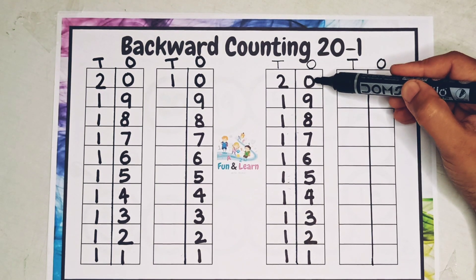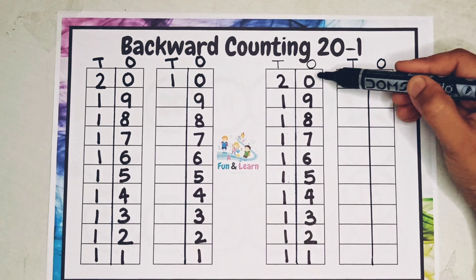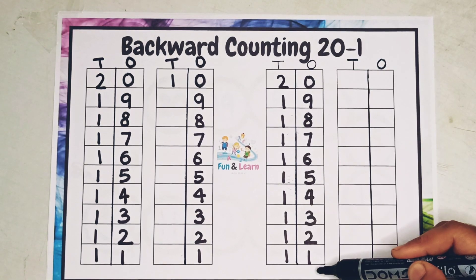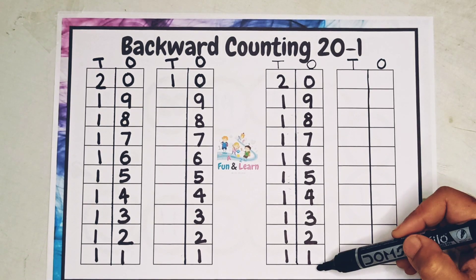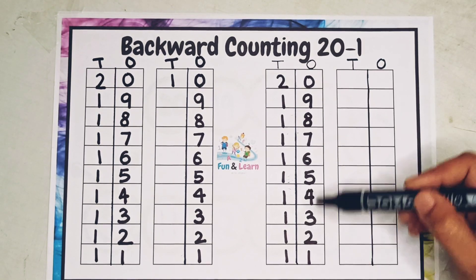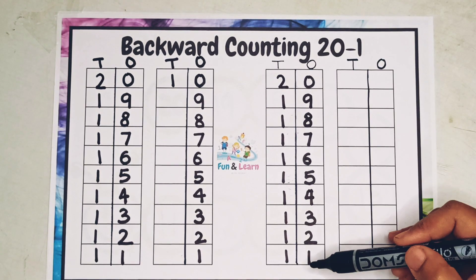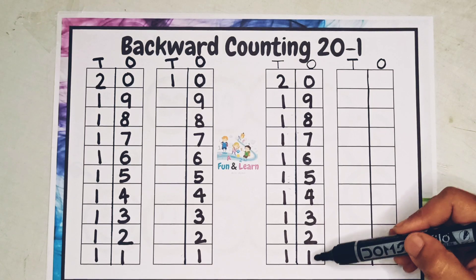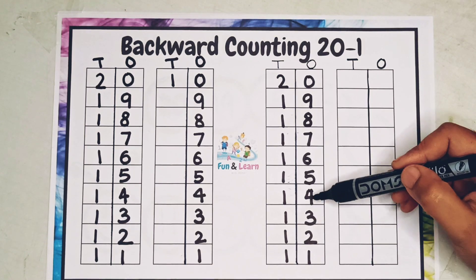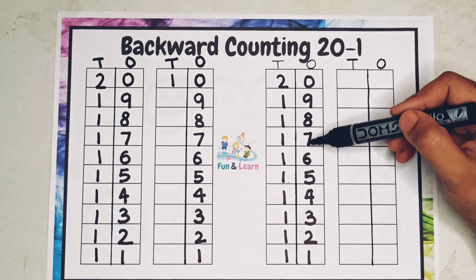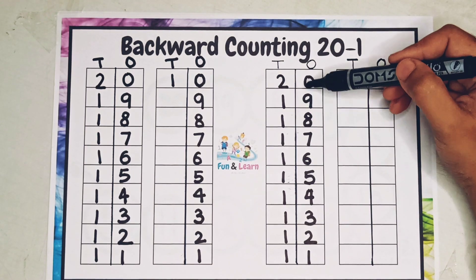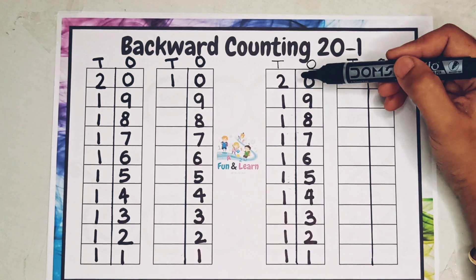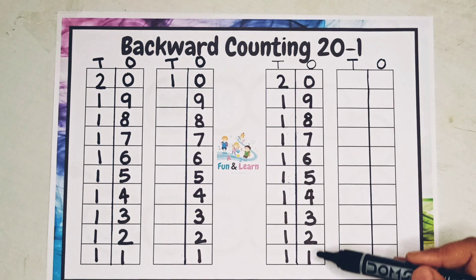You are writing from the largest number to the smallest number. How do we write? Small to large — we write like 11, 12, 13, 14, 15, 16, 17, 18, 19, 20.